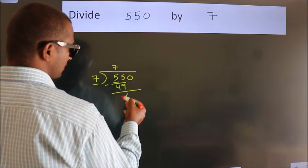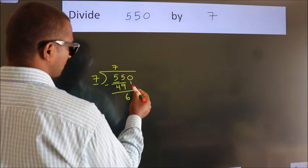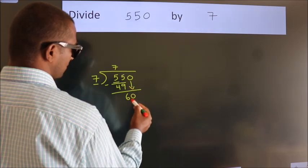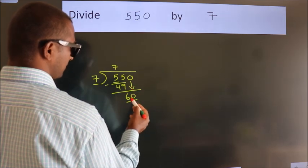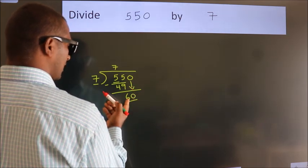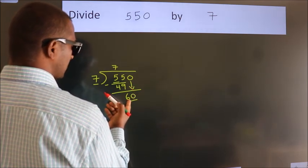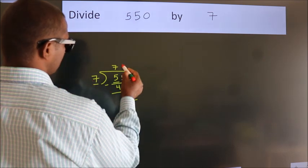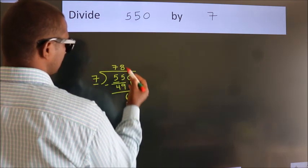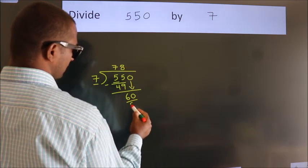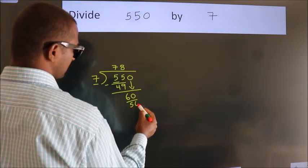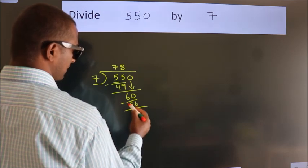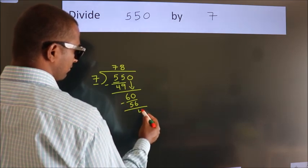After this, bring down the beside number. So 0 comes down, making 60. A number close to 60 in the 7 times table is 7 eights 56. Now we subtract, we get 4.